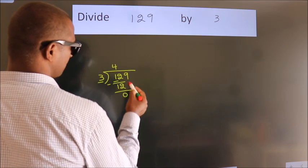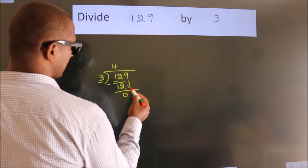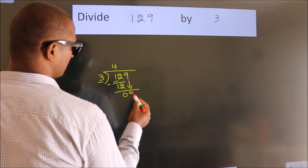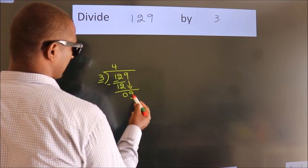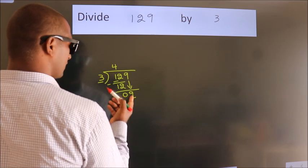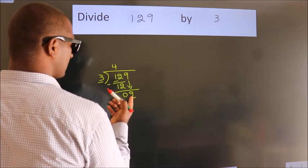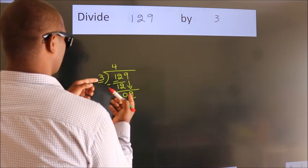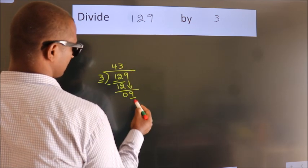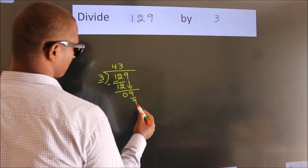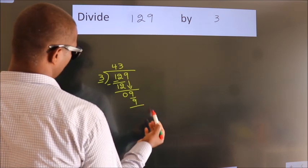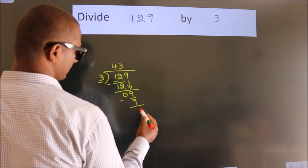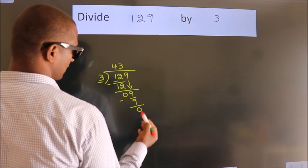After this, bring down the beside number, so 9 comes down. When do we get 9? In the 3 times table, 3 threes are 9. Now we subtract and we get 0.